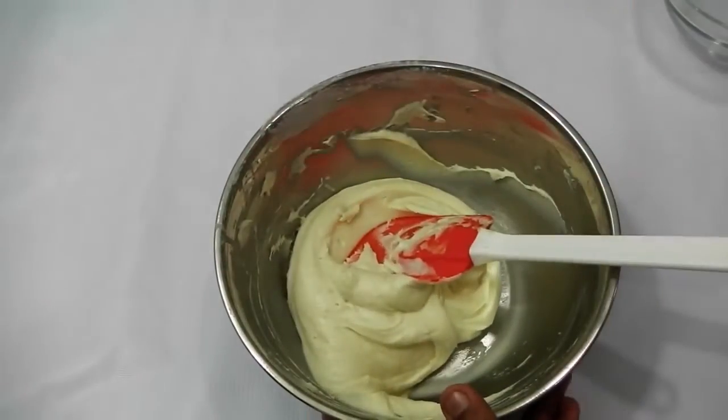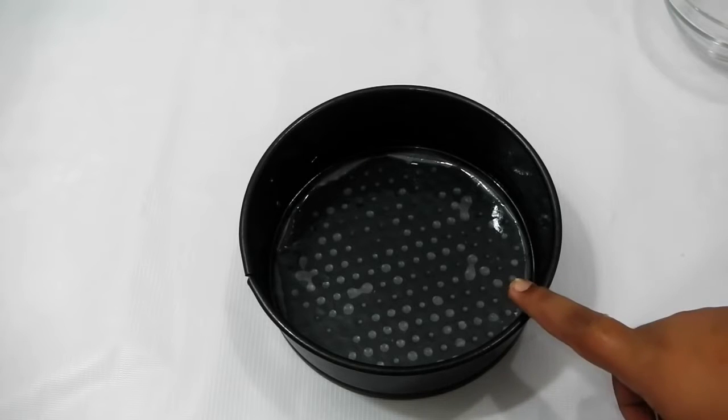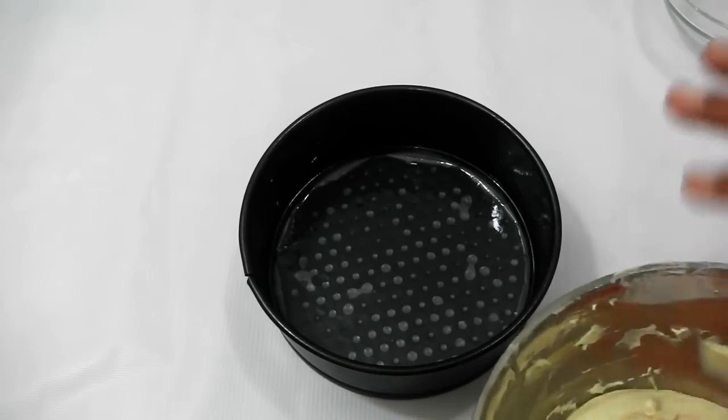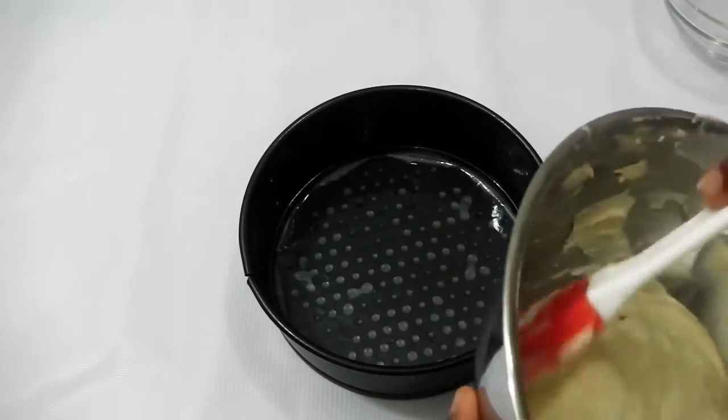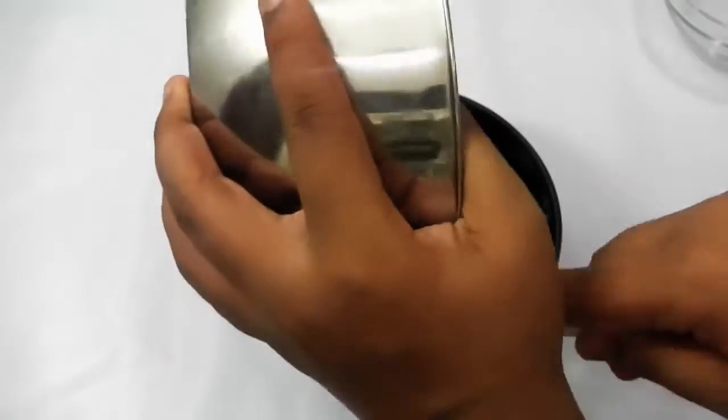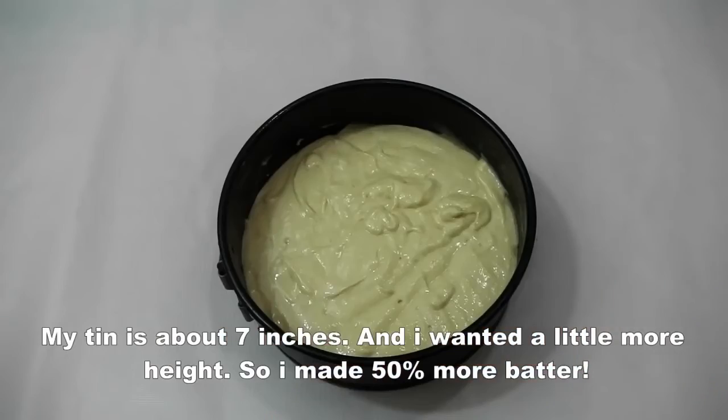Now we're going to bake this. Here I am using a cake tin which is a spring form tin. I have greased with oil all over, applied a parchment paper on the bottom or butter paper. Now we're going to add this cake batter into this cake tin. Here we have our cake batter ready, now we're going to bake this.